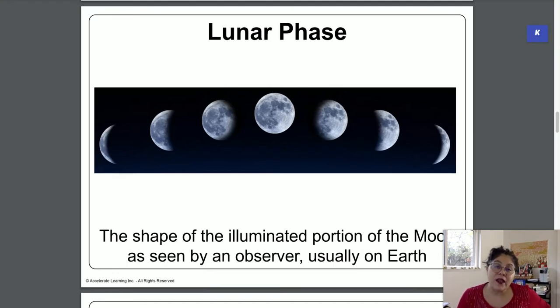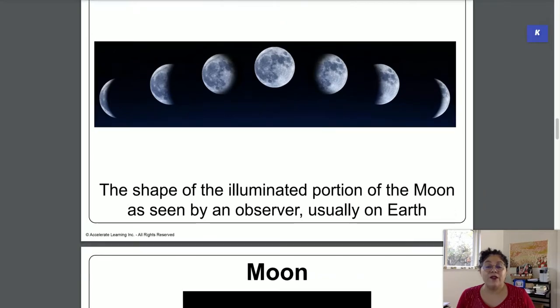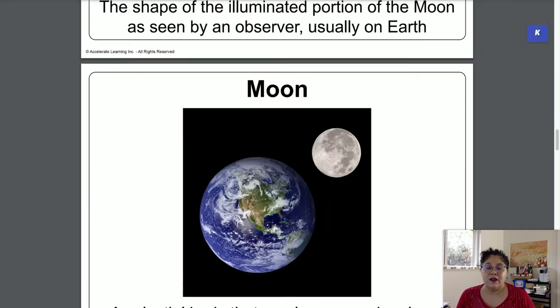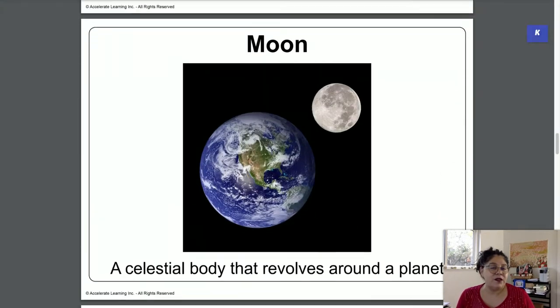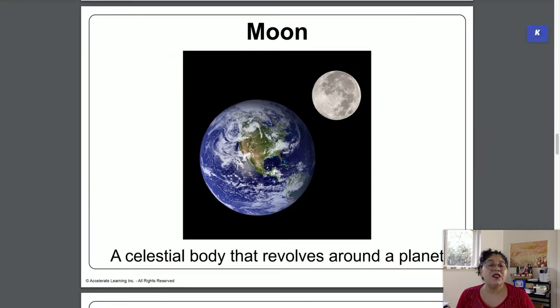And as the Earth and the moon move in our orbits, as we go around each other, the sunlight hits the moon in different places and it makes the moon appear in different phases. That's all it is. It's just about where the sunlight is hitting the moon and how the Earth is compared to where the moon is, so what we can see as the light reflects.